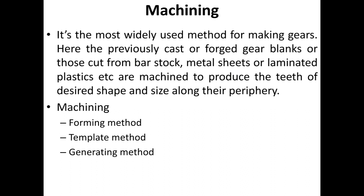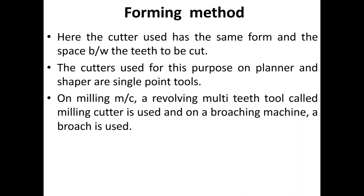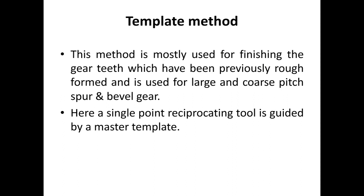In machining, the teeth of the desired shape and size are produced along the periphery of the blank. Under the forming method, the cutter used has the same form as the space between the teeth to be cut. Cutters used on a planer and shaper are single-point tools; on a milling machine, a revolving multi-teeth tool called a milling cutter is used; and on a broaching machine, a broach is used.